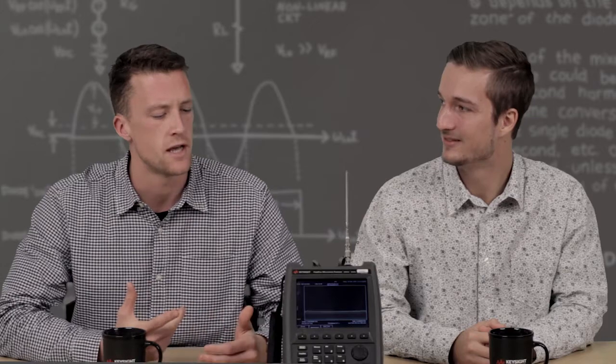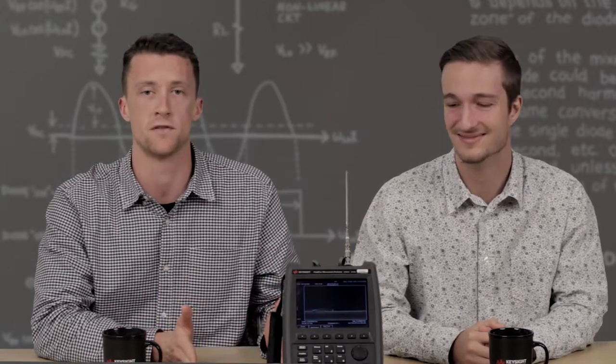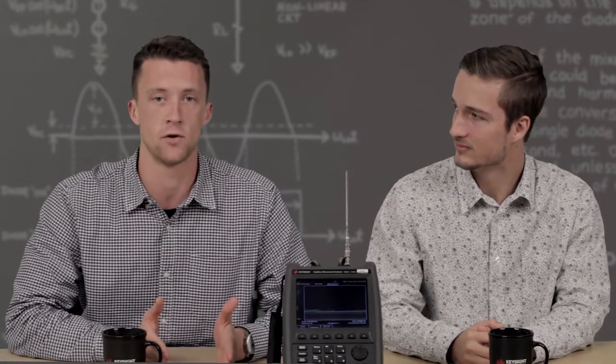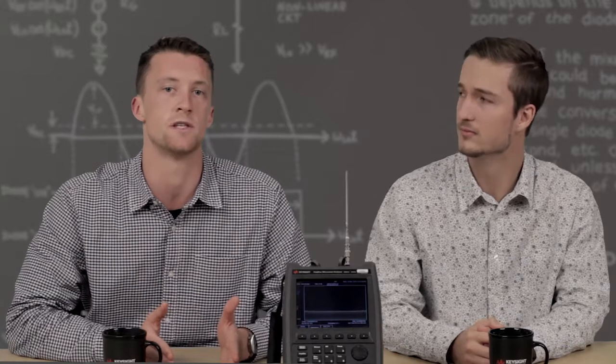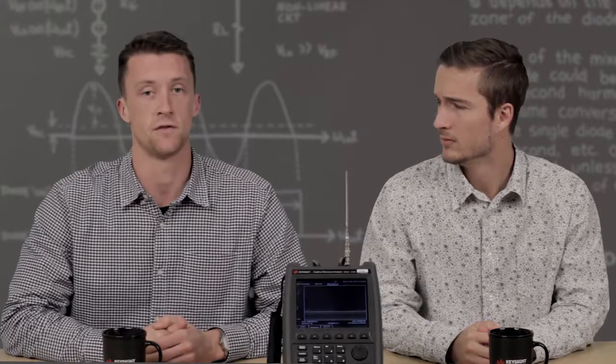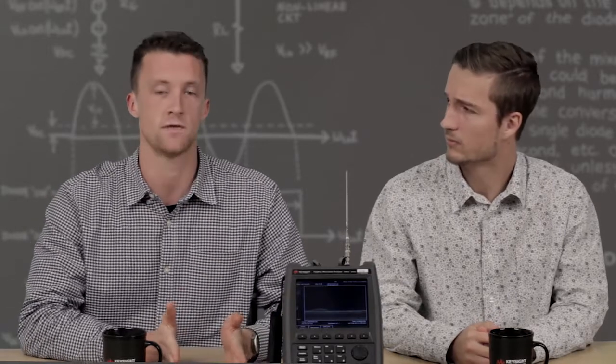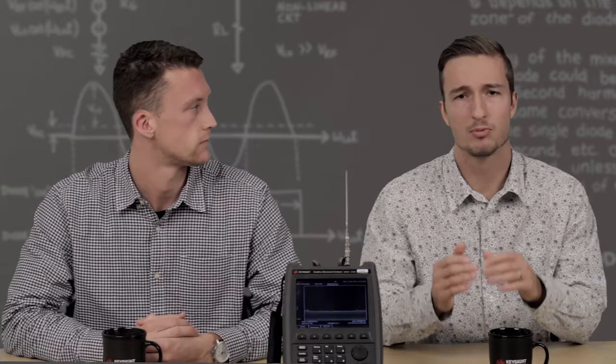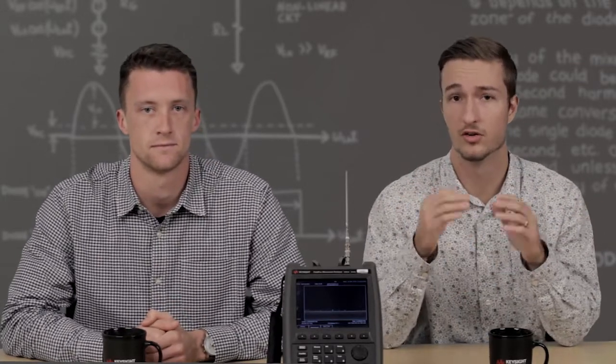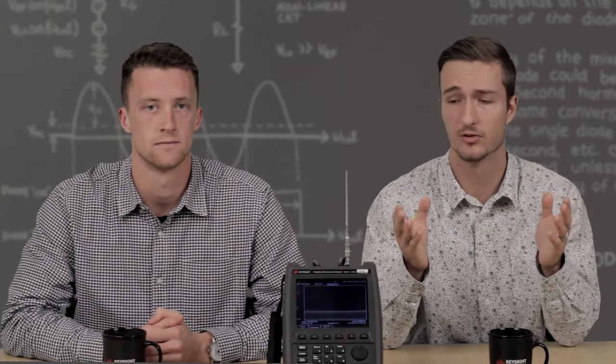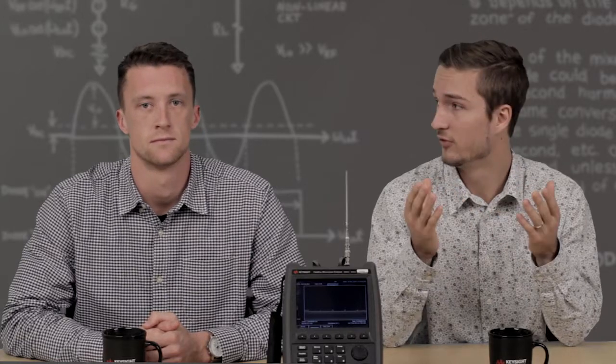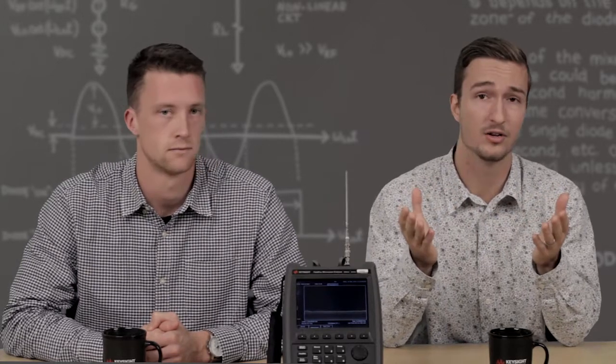In traditional SA mode, the FieldFox is taking measurements for a small period of time and measuring amplitude over time, and then a small period of time after that converting that data through FFT math to a frequency spectrum and putting this onto display. As a result, the FieldFox actually has small periods of time where it's not acquiring any data at all. Problems can occur where if you have a quick pulsing signal or a spectrum that's rapidly changing over time, you can actually miss your signals and not get a full view of the frequency content that you're trying to look for.